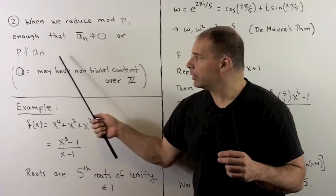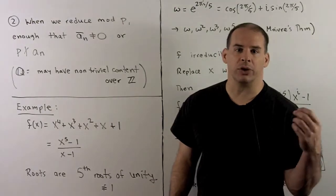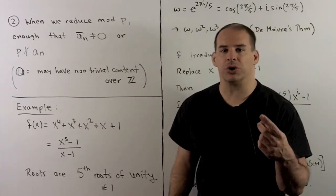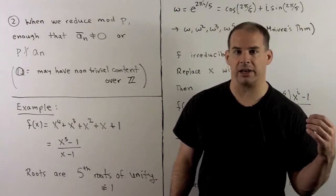Now, with this condition, we can only guarantee irreducibility over Q. Over the integers, we may have non-trivial content now.